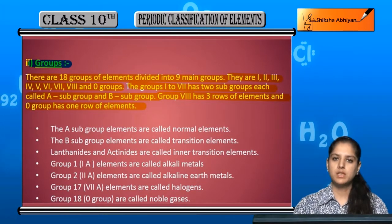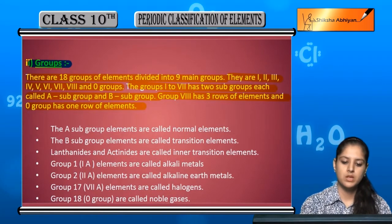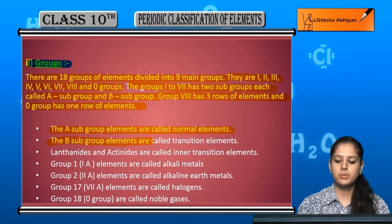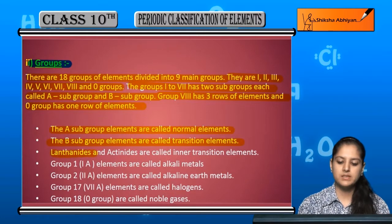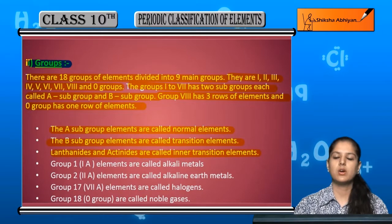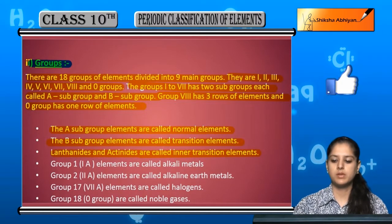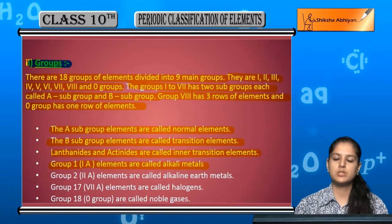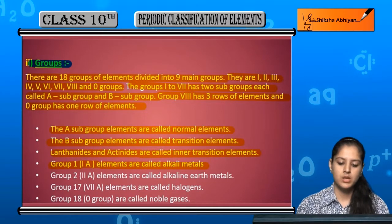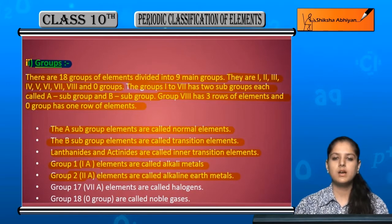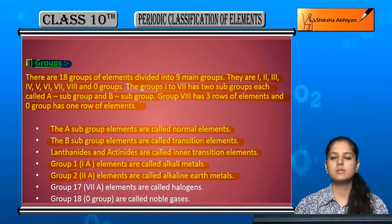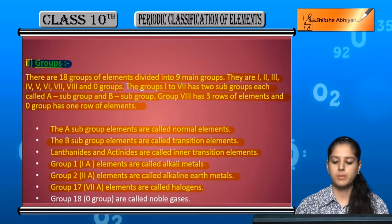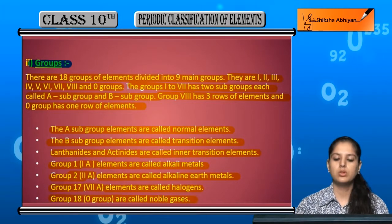The A subgroup elements are called normal elements. The B subgroup elements are called transition elements. Lanthanides and actinides together are called inner transition elements. Group 1A elements are called alkali metals. Group 2A elements are called alkaline earth metals. Group 7A elements are called halogens. Group 0 elements are called noble gases.